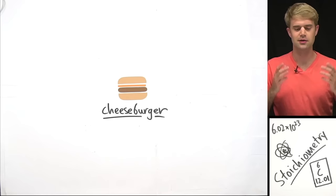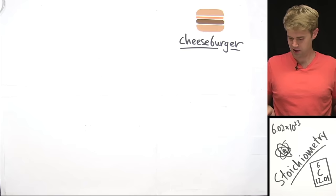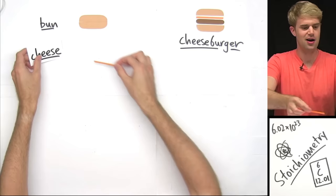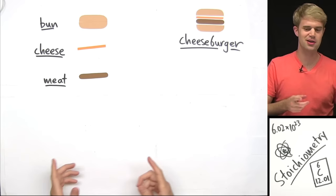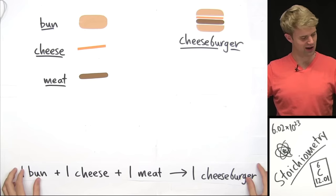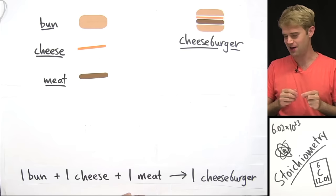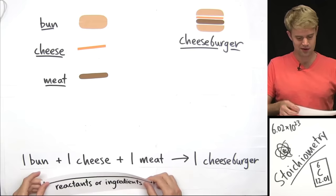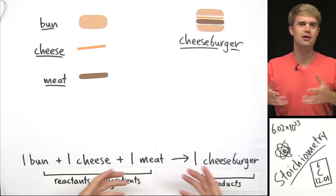Let's say you're having some friends over for a barbecue and you want to make some cheeseburgers. Here's what you're going to need: a bun, a slice of cheese, and a piece of meat. Since we're comparing chemistry and cooking, we can write the recipe kind of like a chemical equation: one bun plus one slice of cheese plus one piece of meat gives us one cheeseburger. The ingredients we start with are like reactants in a chemical reaction, and the product is the cheeseburger.